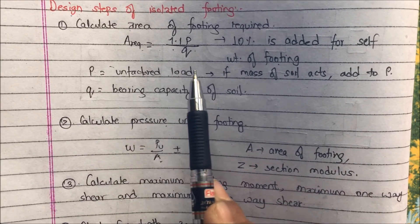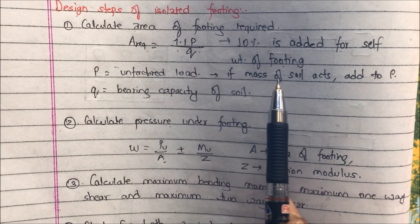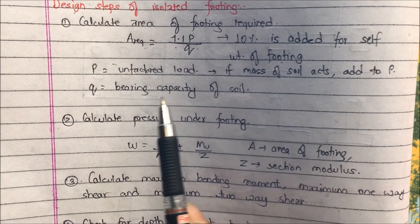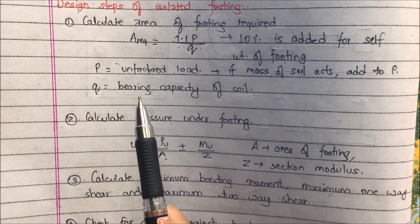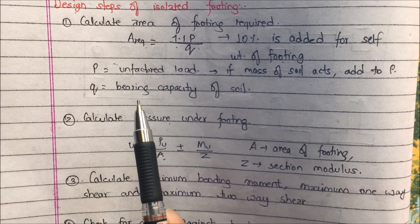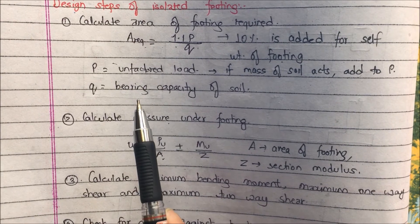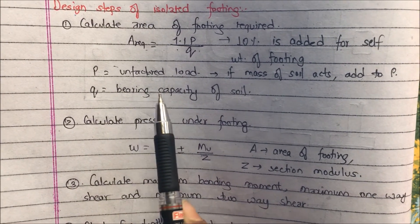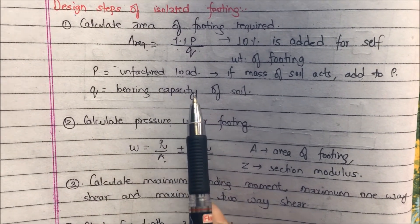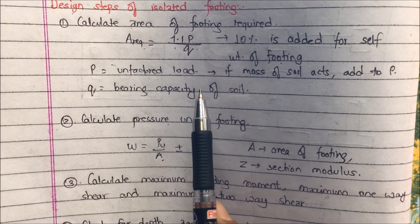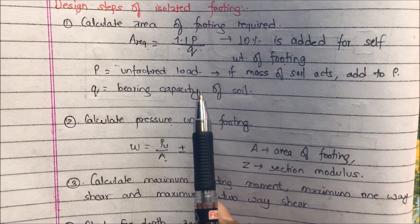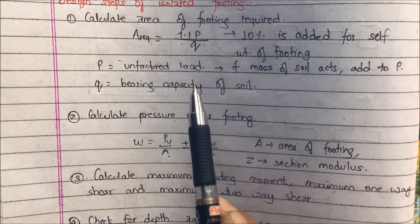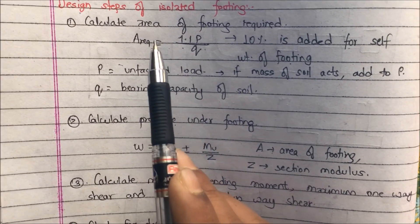P is the unfactored load, and if the mass of soil acts, the weight of the soil backfilled into the trench is added to P. Q is the bearing capacity of the soil, which depends upon the nature and condition of the soil.